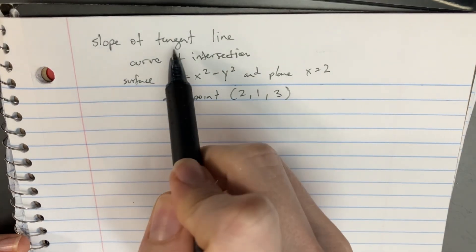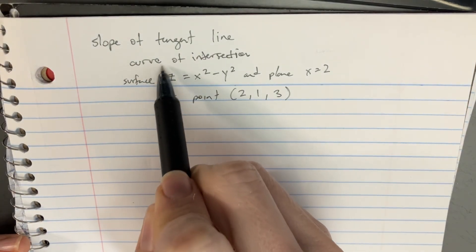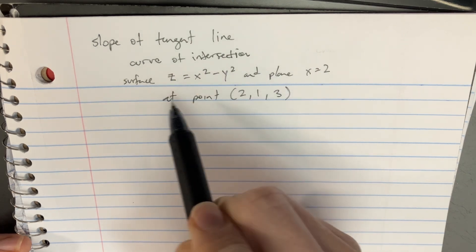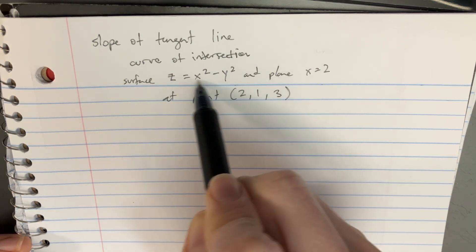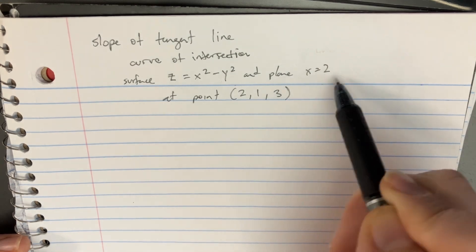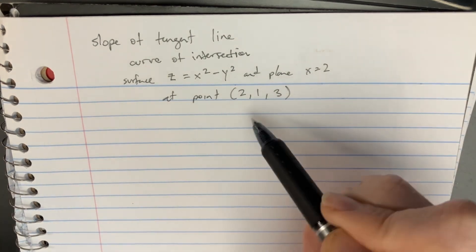In this problem, we're looking for the slope of the tangent line to the curve intersection between this surface z equals x squared minus y squared and the plane x equals 2 at this point.